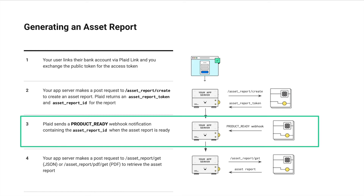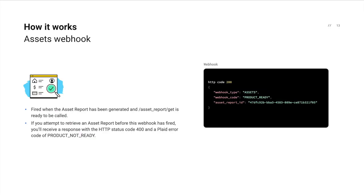Now that you've called the asset report create endpoint, it's time to let Plaid go to work and wait for the product ready webhook. Once the report is available, Plaid will send a webhook with webhook type of assets and webhook code of product ready. The webhook payload will include the asset report ID. Also worth noting: if you try to retrieve an asset report before the webhook fires, Plaid will return a product not ready error.